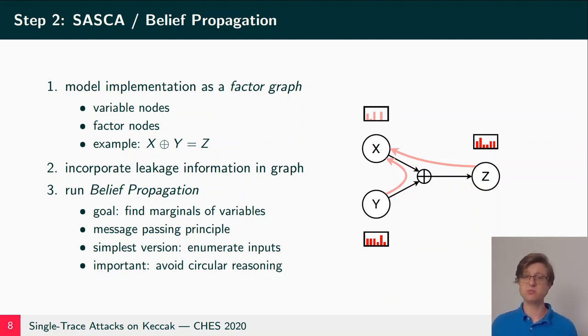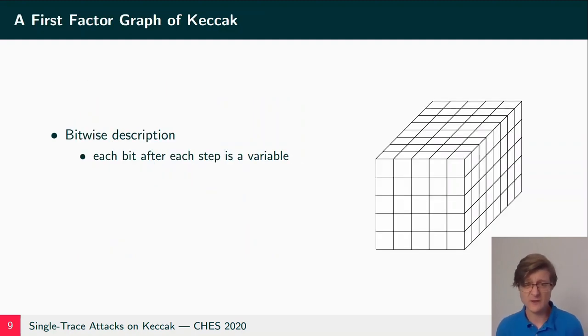Now we can do the same in a different direction. And here it's important to avoid circular reasoning. So the information sent in the direction of X must not depend on the previous information that X sent to the other nodes, which means that for Z we take the original distribution, not the updated one. Finally we can do the same in Y direction and we have updated probabilities which we can send out to further nodes.